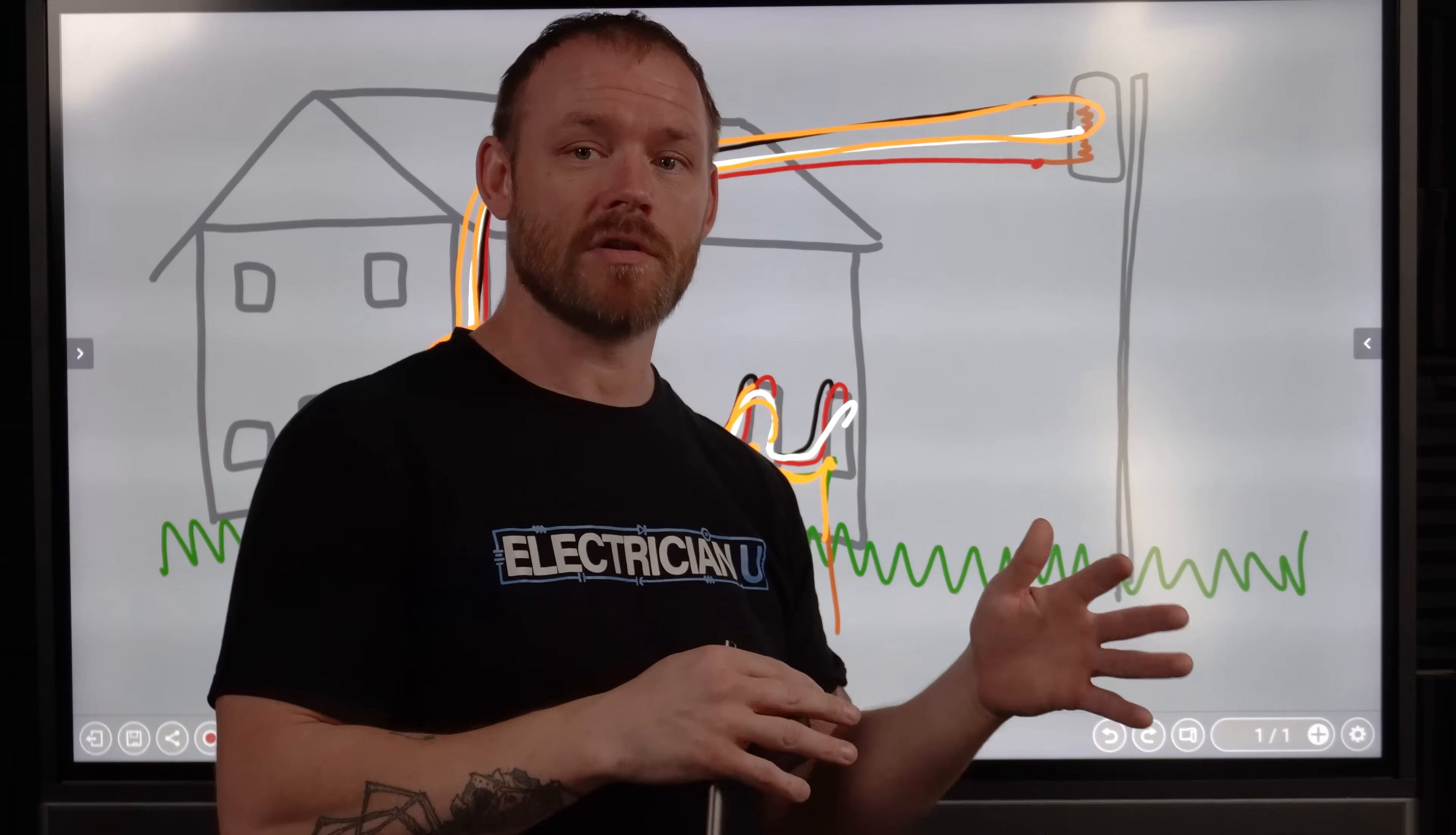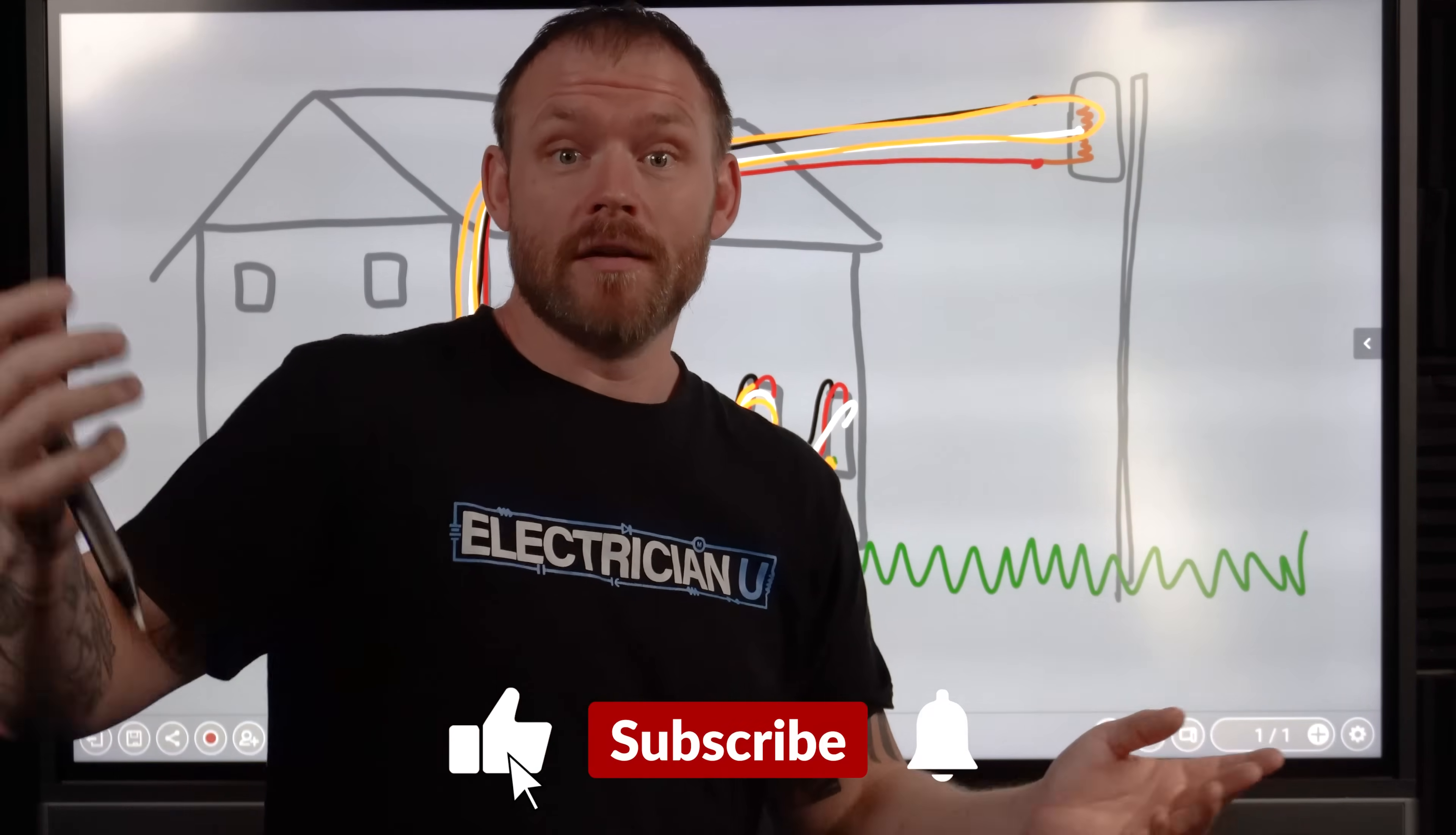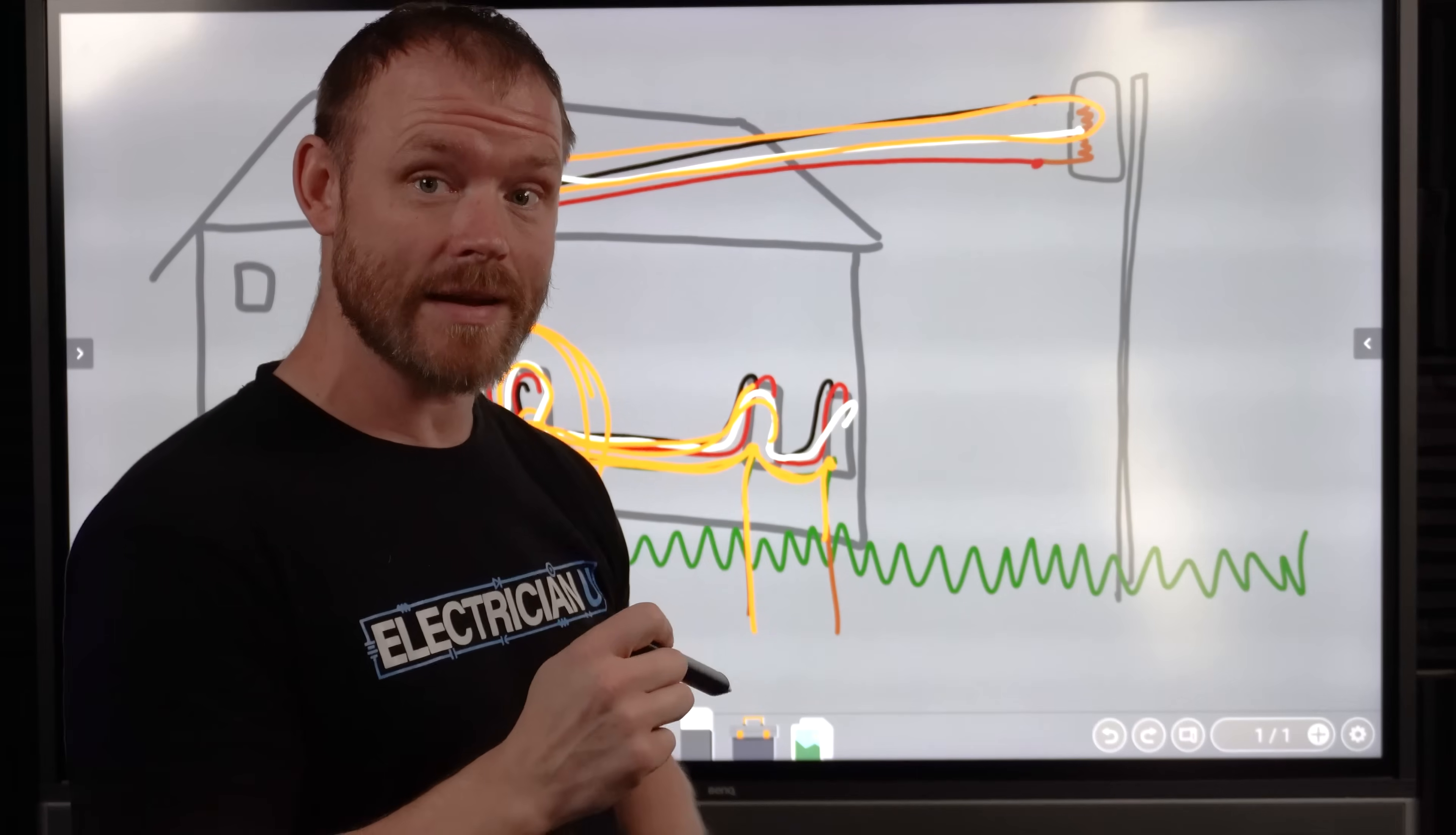So you just always have to remember that the National Electrical Code is a minimum standards guideline. It's just the bare minimums. If you want to run way bigger conductors, if you want to put more protection on something, you're absolutely okay to do that. But code definitely specifies that you do not make that neutral to ground bond except at the service disconnecting means.